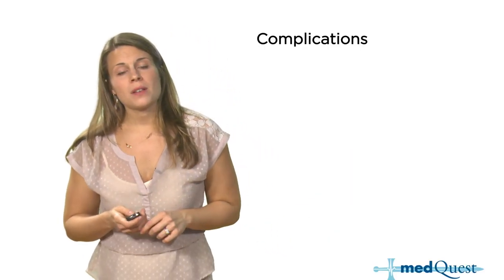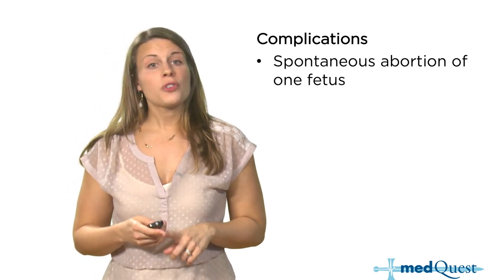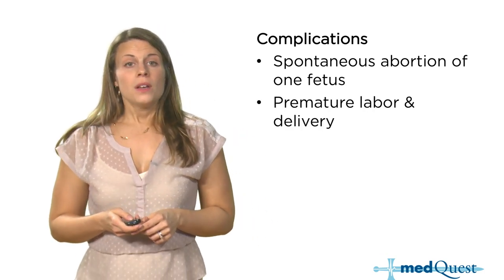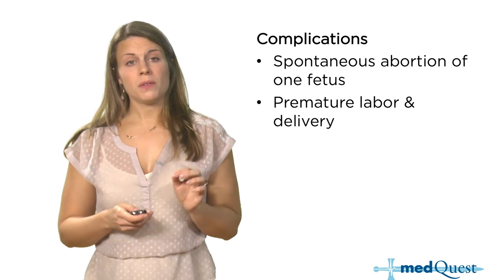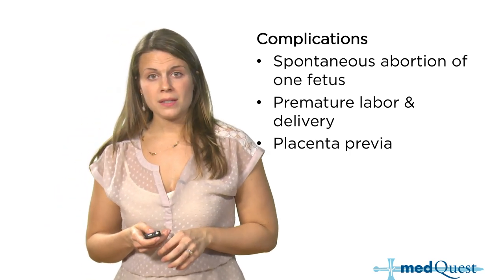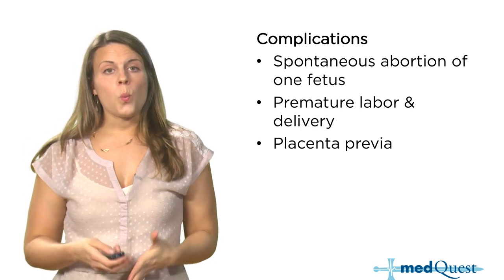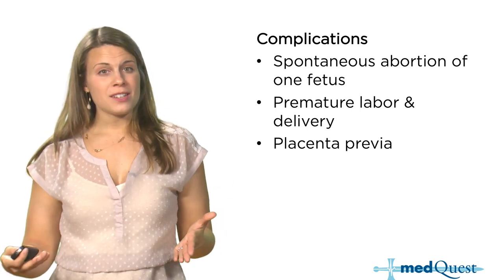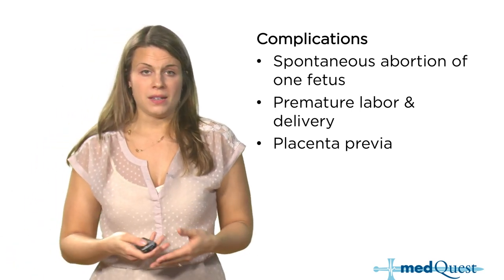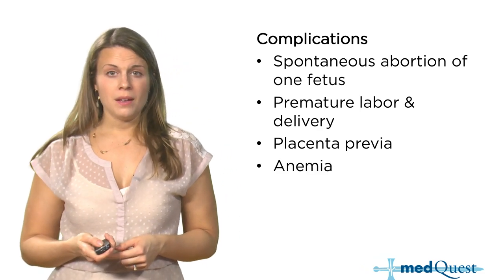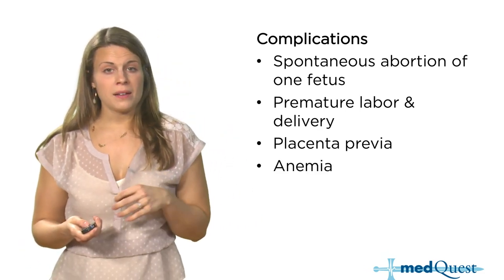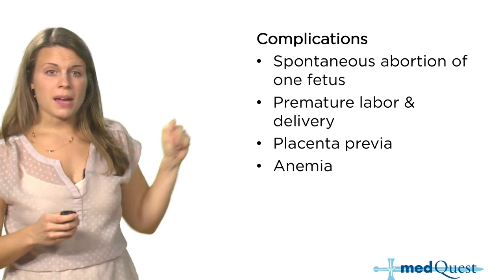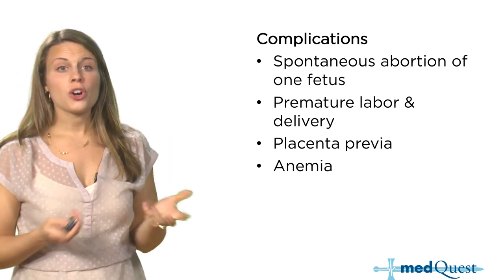Complications of multiple gestations include spontaneous abortion of one or both fetuses, premature labor and delivery (very common, especially in twins), and placenta previa — because the placenta looks for space to implant and sometimes finds it right over the os. These patients are also more prone to anemia and have increased blood volume compared to singleton pregnancies.